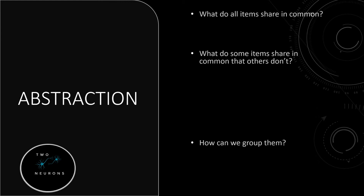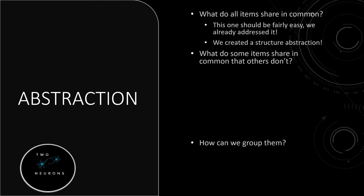What do all items share in common? This one should be relatively easy, as we've already addressed it earlier in this section. We addressed it by creating an abstract structure where we have our item name, our description, our item weight, if it's consumable or not, and where we have an icon. That is our item master — that is the abstraction for all items.